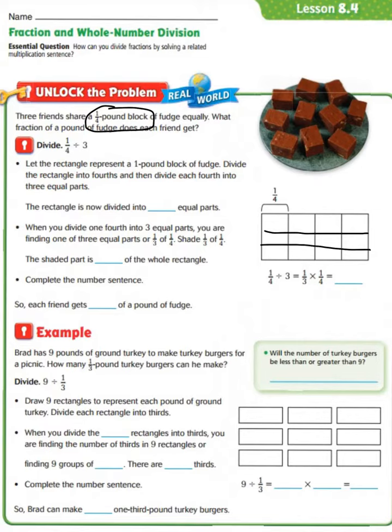Now you see that we have each 1/4 piece divided into 1, 2, 3 pieces. So the rectangle is now divided into 12 equal parts. When you divide 1/4 into three equal parts, you are finding one of three equal parts, or 1/3 of 1/4.